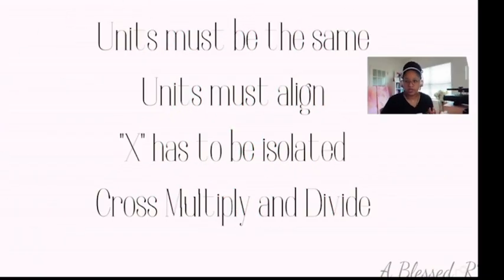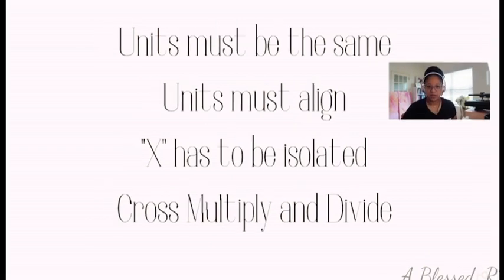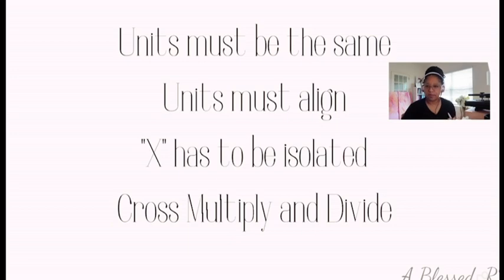With ratio and proportion, there are a couple of rules you have to follow. The units must be the same — if you're using milligrams, they have to be the same on both sides. Whether it's units, milliequivalents, grams, or whatever, they have to match. Units of volume also have to match, and they must align. If you have milligrams on top, you have to have milligrams on top on the other side, and the same for the bottom.